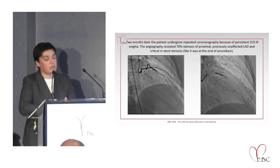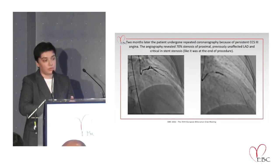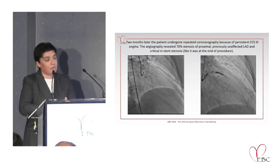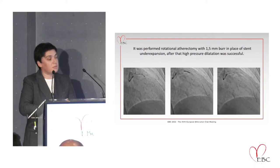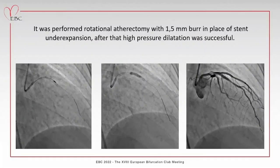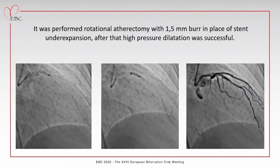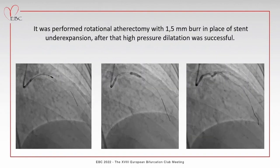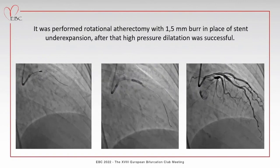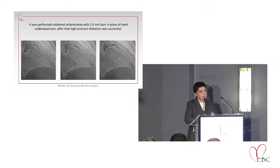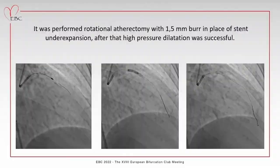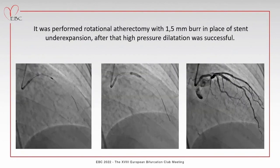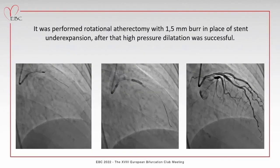We prescribed a scenario for this situation and decided to perform rotational atherectomy at the site of the unexpanded stent. We used a 1.5mm burr at high speed with no difficulties placing the wire or burr. After three ablations, a high-pressure balloon was inflated and expanded fully without any problem. However, we understood we had a blocked stent at the site of the previous stenosis and a significant lesion at the proximal LAD.